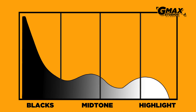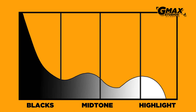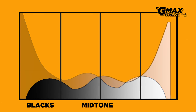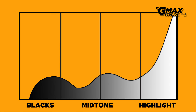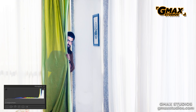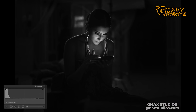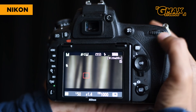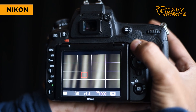that the histogram is not pressed too much to the left or to the right, because this will mean that there is no information in the blacks or in the highlights. To view the histogram on the camera, you have to press the Info, Eye, or Display button.